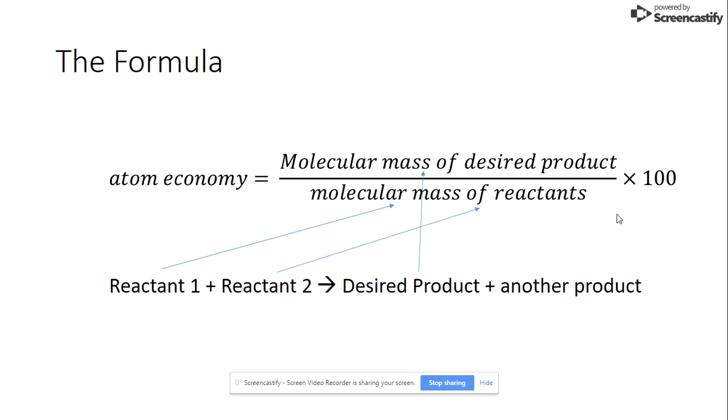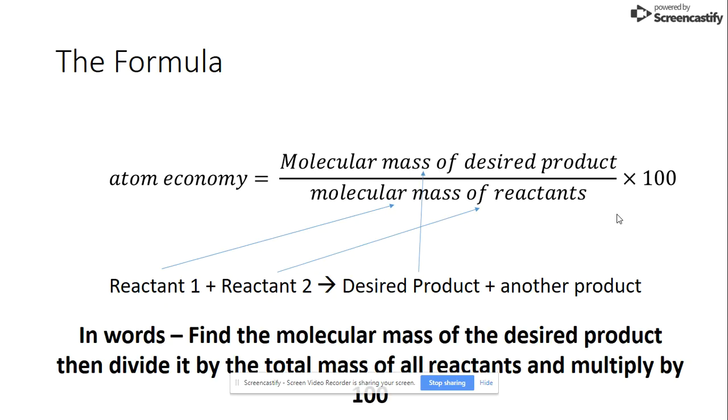And for some students writing this out in words can be quite helpful so if you pause the video pick which way makes most sense to you and take a note of that. So in words you would say you find the molecular mass of the desired product then divide it by the total mass of all reactants and lastly you would multiply that by 100 and that would give you the percentage. You've got a clear recipe then to step by step through exactly how to do the calculation.